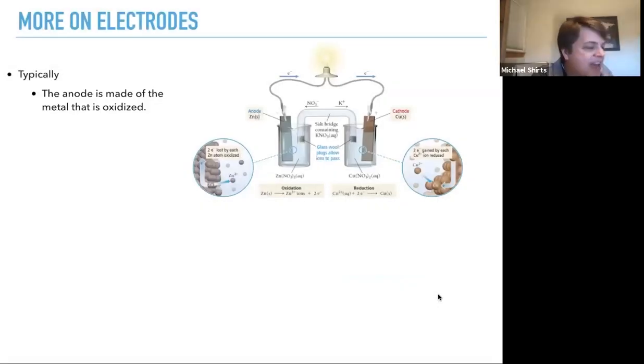A little more on electrodes. Typically, the anode is made of the metal that's oxidized. For example, in here, we've got zinc as the anode here, and that's literally the metal that is dissolving into zinc 2+. On the other side, we start off with some copper.